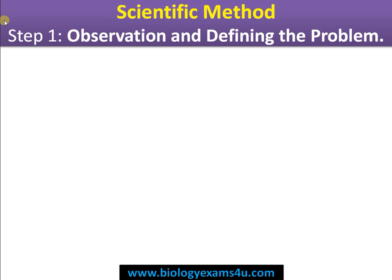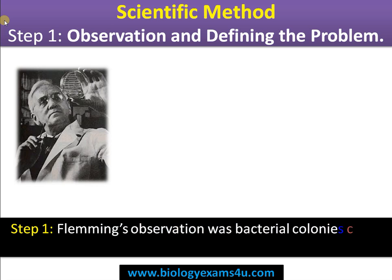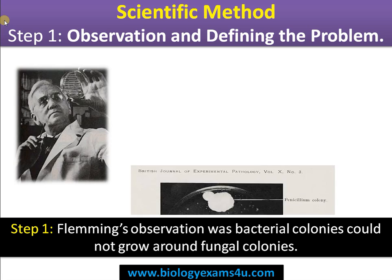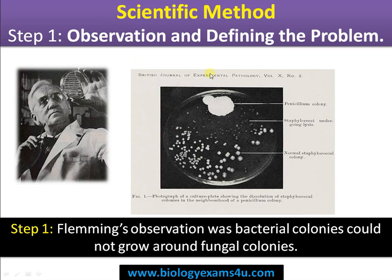Step 1: Observation and defining the problem. Fleming's observation was that bacterial colonies could not grow around fungal colonies. In his original paper, you can see a mold colony, and around that region the staphylococcal colony is absent or highly inhibited, while normal colonies are visible elsewhere.